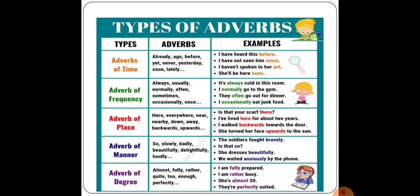Now we will discuss each type of adverb in detail. First, adverb of time. Some words used as adverbs of time are: already, ago, before, yet, never, yesterday, soon, and more. For example: 'I have seen this before' — it is telling a time, when he has seen. 'I have not seen him since' — 'since' is also telling a time.